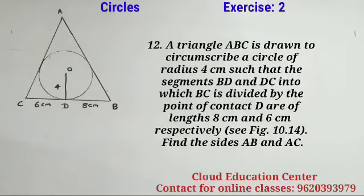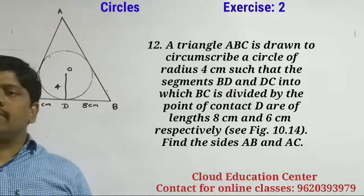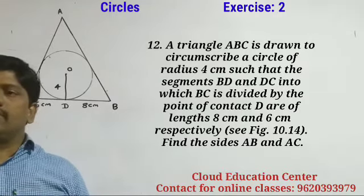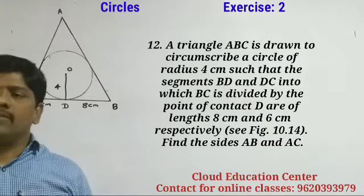Student, read the question. A triangle ABC is drawn to circumscribe a circle of radius 4 cm such that the segments BD and DC into which BC is divided by the point of contact D are of length 8 cm and 6 cm respectively. Find the sides AB and AC.